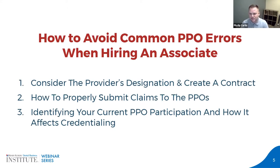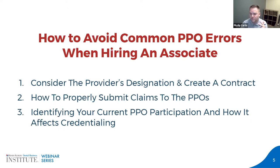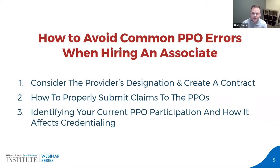This is applicable to hiring an associate just as much as it is to bringing on another owner. Whenever you're credentialing a doctor at your practice in addition to the one that's already there, you want to be aware of and evaluate three main categories: the provider's designation and how to create the contract, how to properly submit claims to PPOs, and identifying your current PPO participation and why that's important.